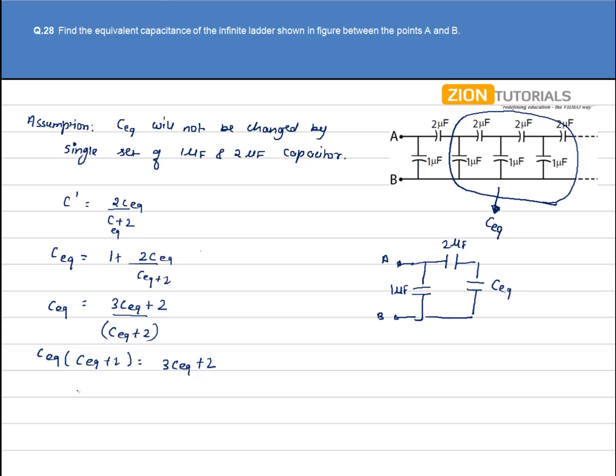On solving this equation we get the value of C equivalent as minus 1 and 2 microfarads. Now obviously minus 1 microfarad is not possible, so 2 microfarads is my answer.